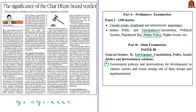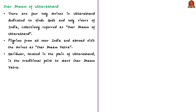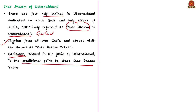Let us take up this news article from the editorial page, which talks about the recent Uttarakhand High Court verdict on the Chardham Devasthanam Management Board Act of 2019. Chardham refers to four holy shrines in Uttarakhand dedicated to Hindu gods and holy rivers — located in the Garhwal region of Uttarakhand. Pilgrims from all over India come to Uttarakhand to visit these shrines, and Haridwar is the traditional starting point for the Chardham Yatra.